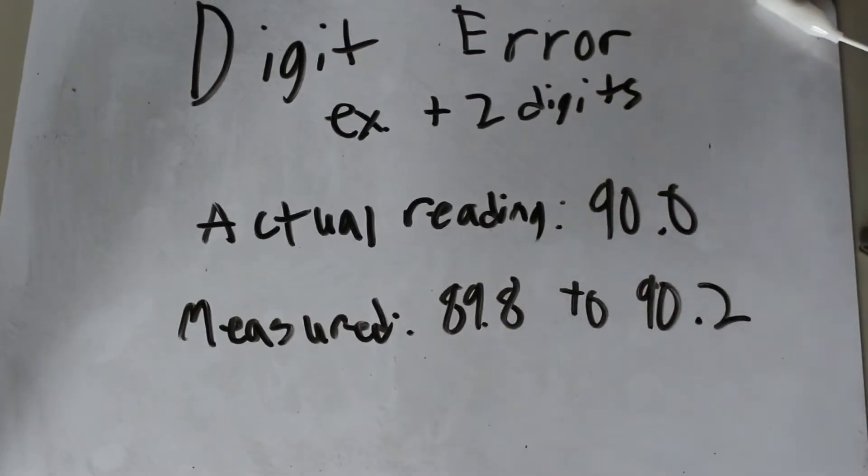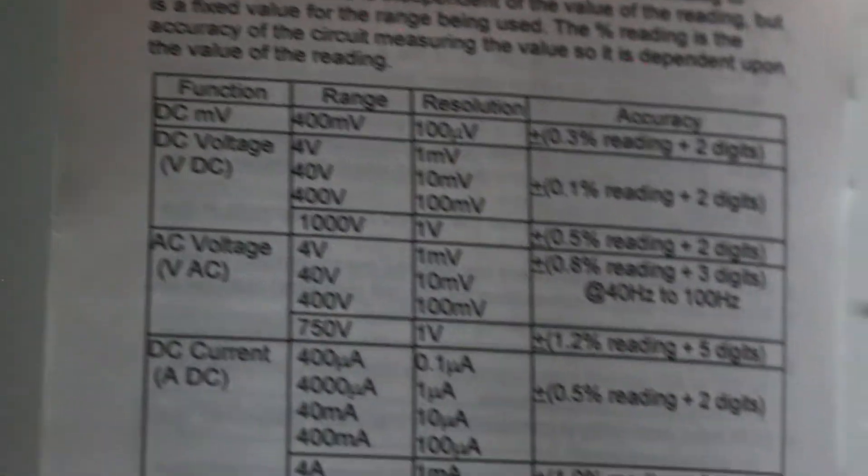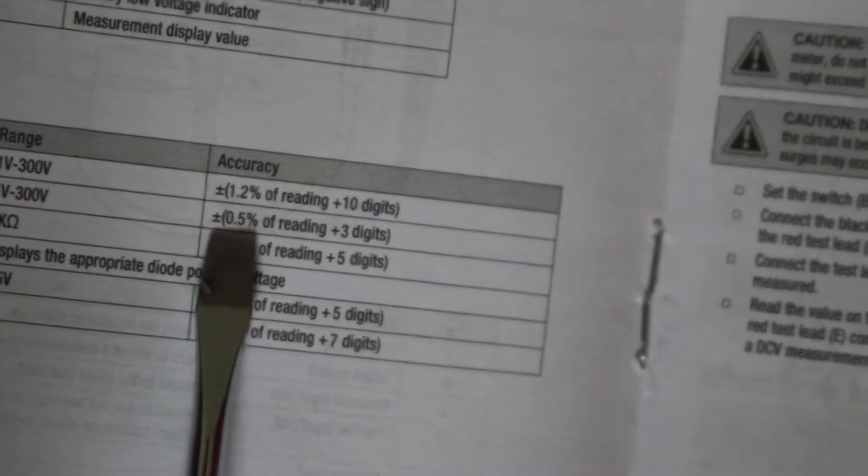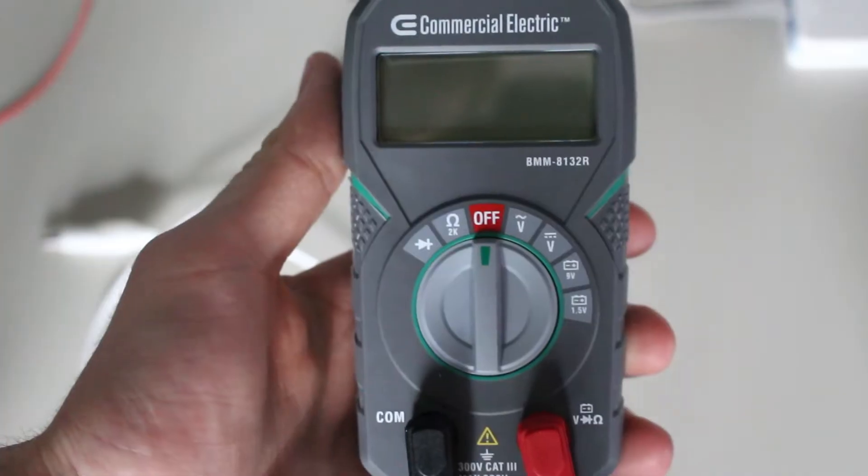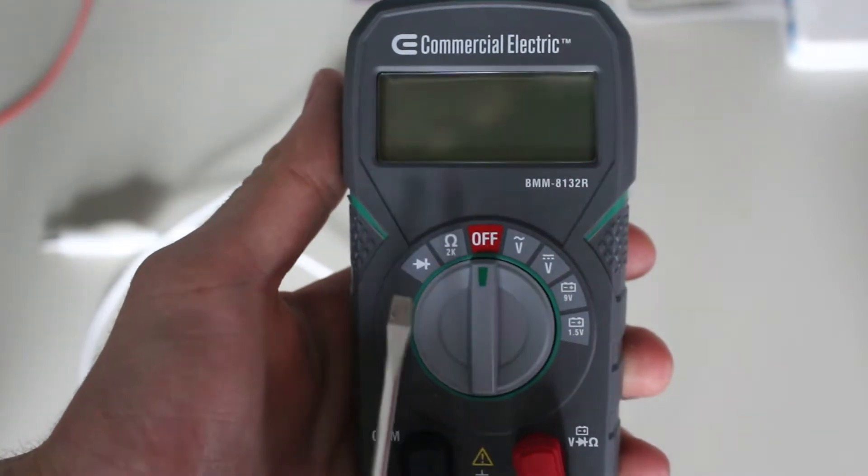Both of the more expensive multimeters have a digit error of 2, and the cheaper ones have a digit error of 3. Adjusting to the proper range will reduce the effect that the error has on your measurement.